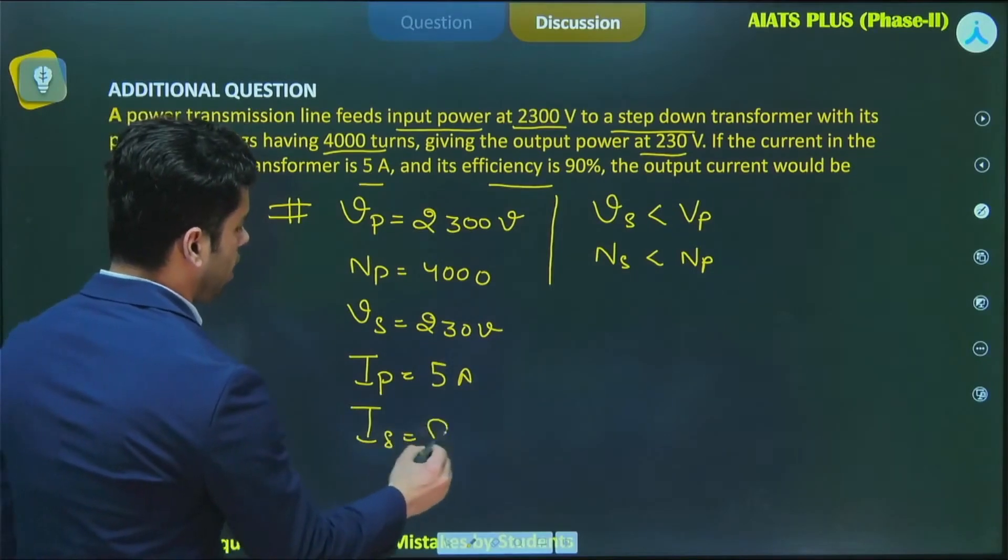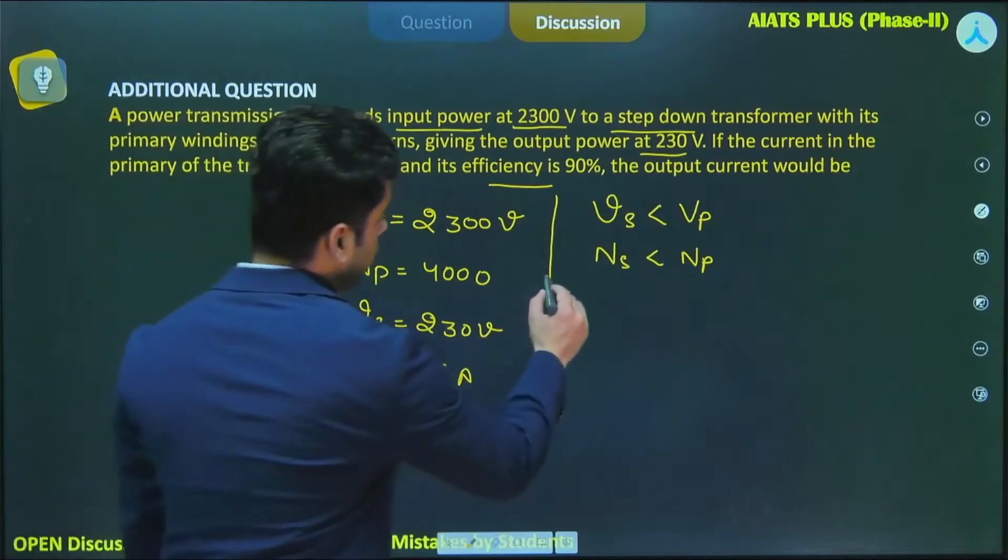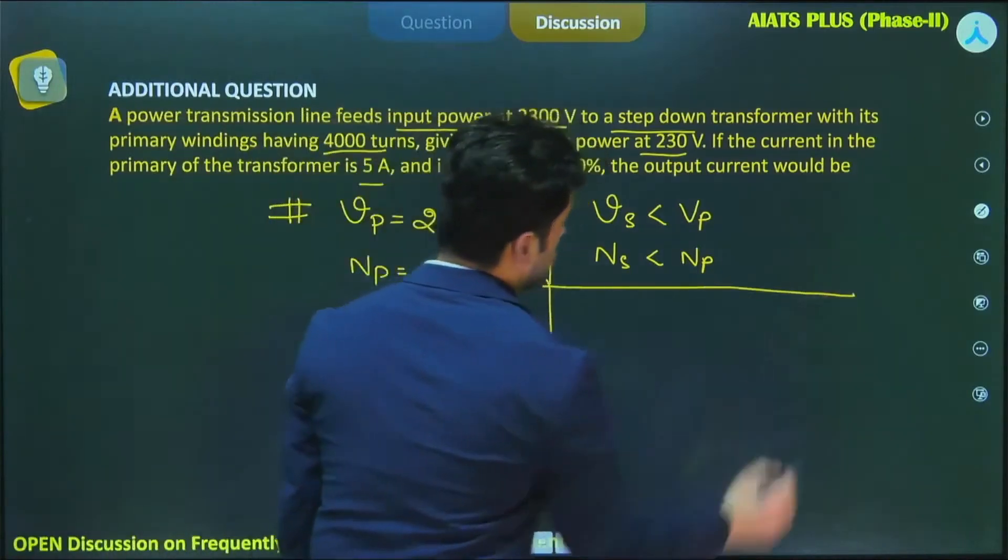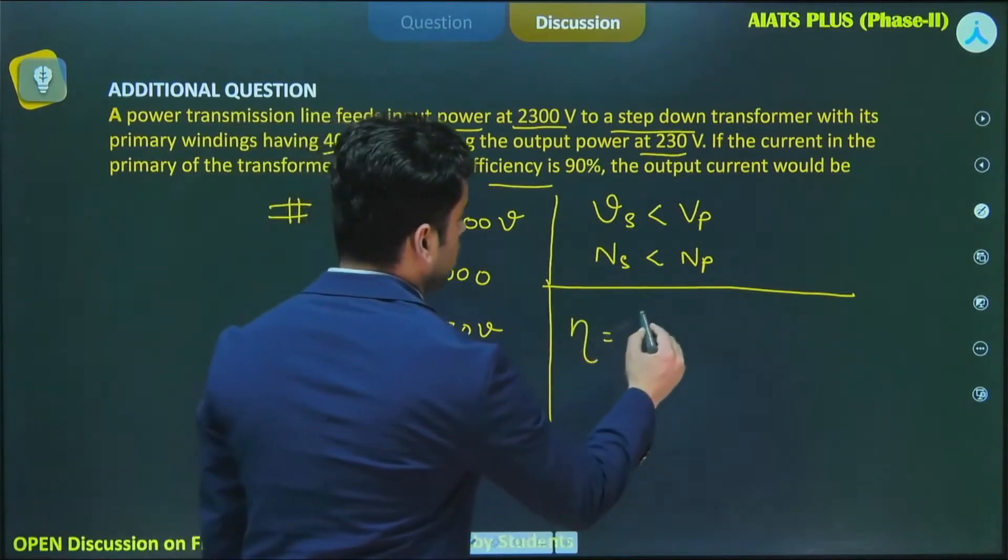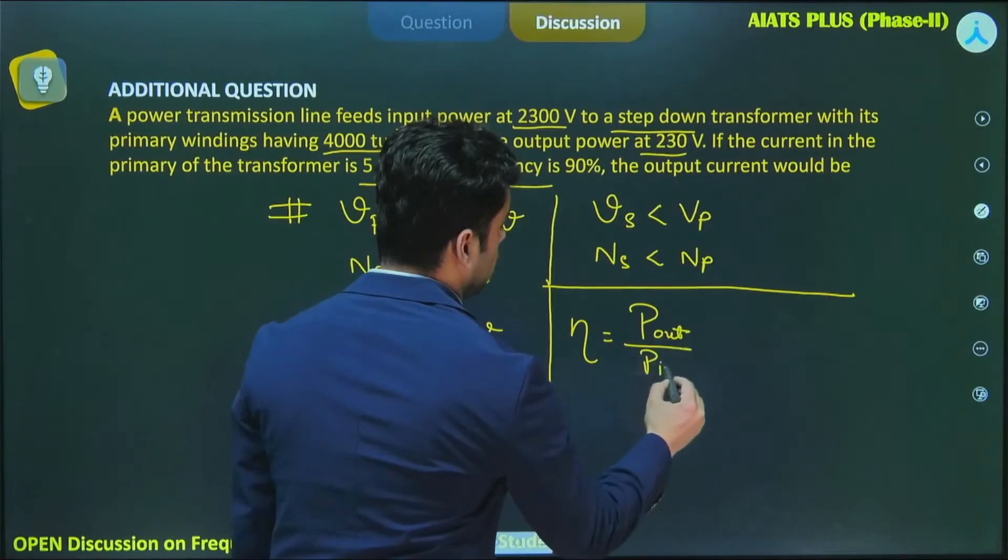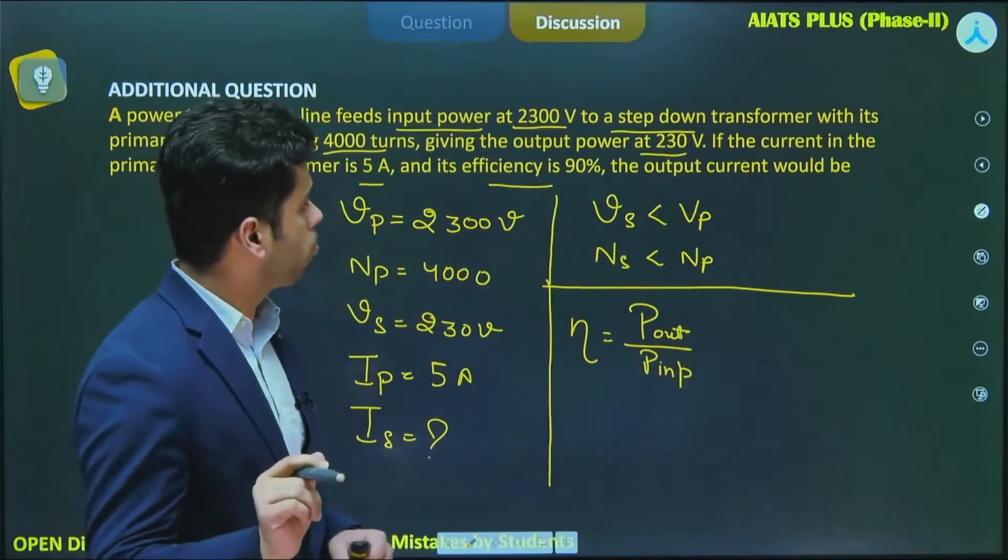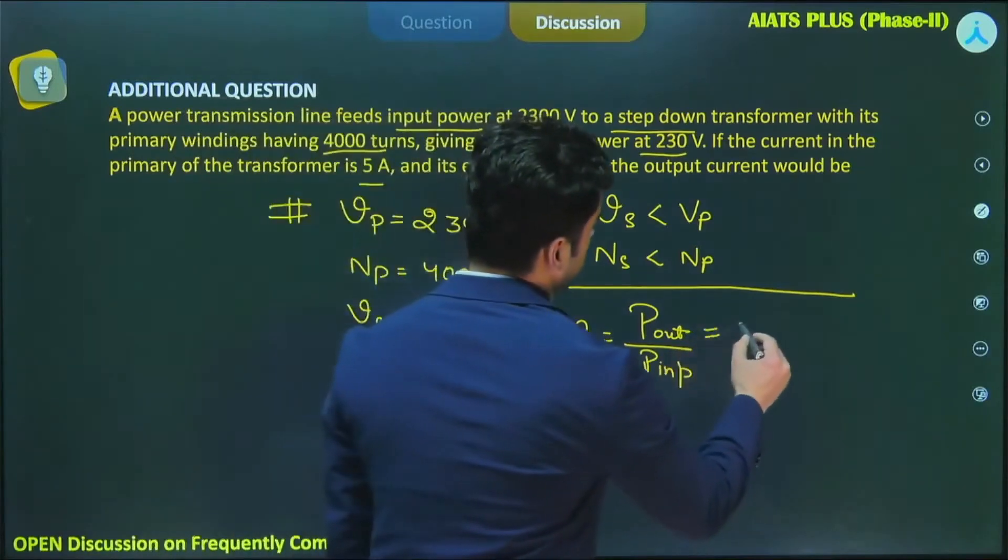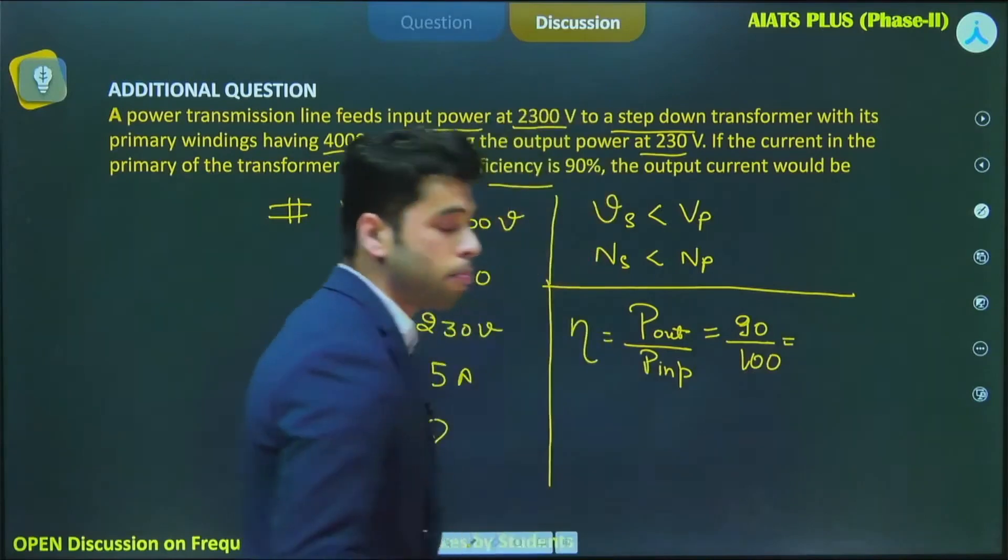We can use the relation of efficiency. What is efficiency of a transformer? It is defined as the ratio of output power upon the input power. According to the problem, the efficiency is 90%, so I can write that 90 by 100 equals output power upon input power.